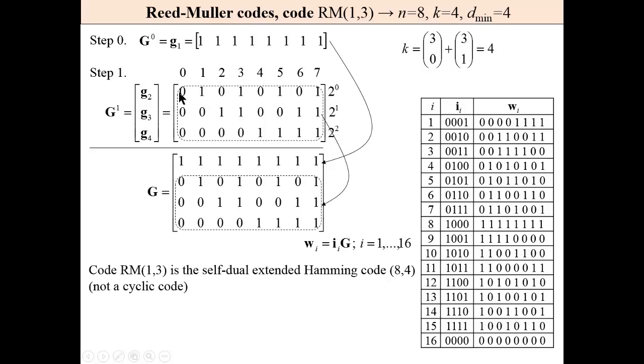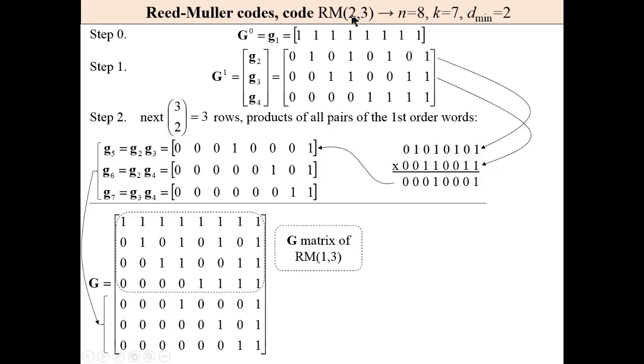This is the matrix. This matrix describes the self-dual extended Hamming code (8,4). This term 'self-duality' will not be explained here. This code, please observe, is not a cyclic code. Reed-Muller RM(2,3).